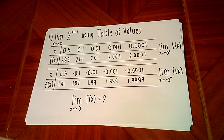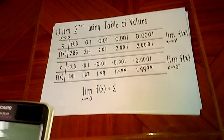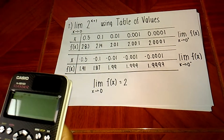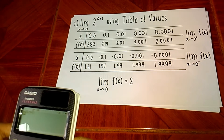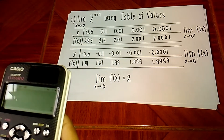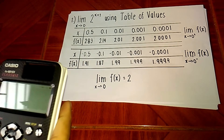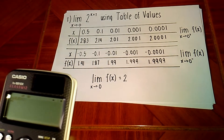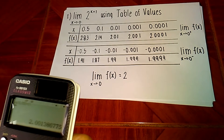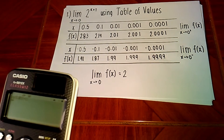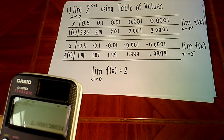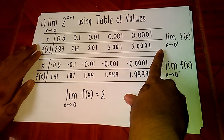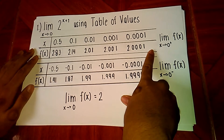We substitute each input value into the function. For 0.5, we get 2.83. For 0.1, we get 2.14. For 0.01, we get 2.01. For 0.001, we get 2.001. As you can see, the y values approach 2 but do not land at 2. So we can say that the limit of the function as x approaches 0 from the right is 2.